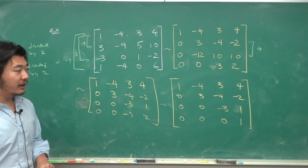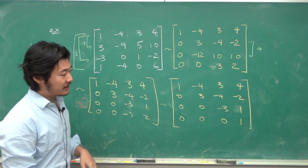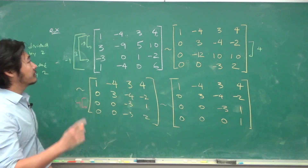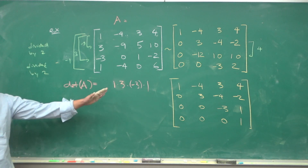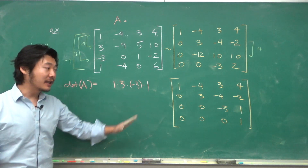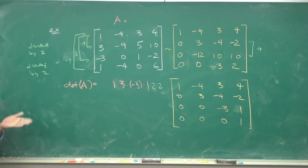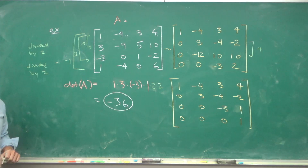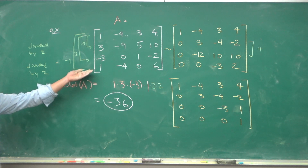The determinant of an upper triangular matrix is just the product of the diagonal entries — you can verify this by repeated cofactor expansion. So the determinant of the original matrix A is 1 times 3 times negative 3 times 1, but since we divided by 2 twice, we multiply back by 2 times 2 times 2, giving 6 times negative 6 = negative 36.